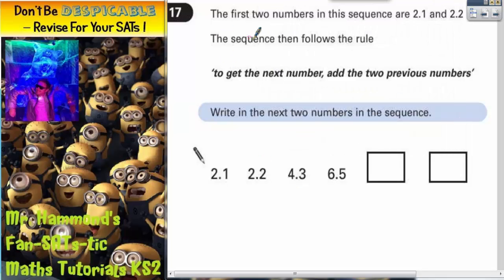Question 17. The first two numbers in this sequence are 2.1 and 2.2. The sequence then follows the rule: to get the next number, add the two previous numbers. Write in the next two numbers in the sequence.